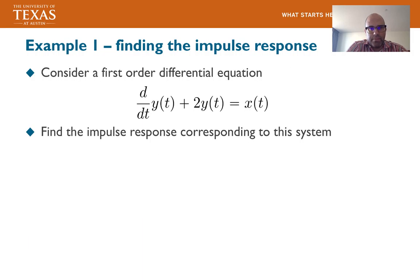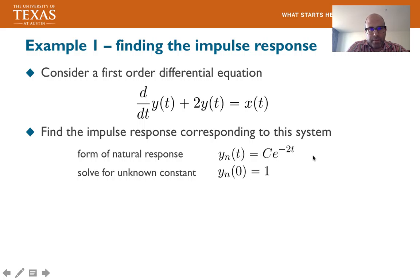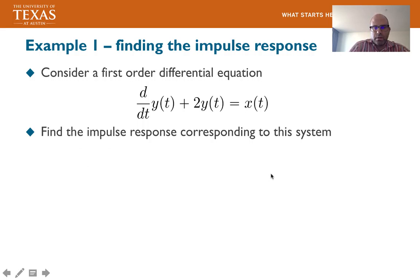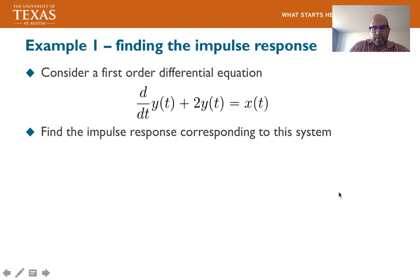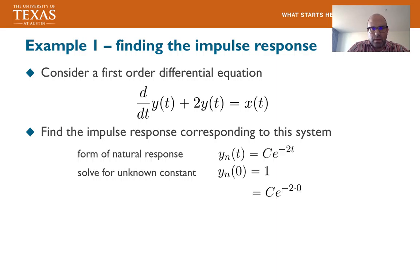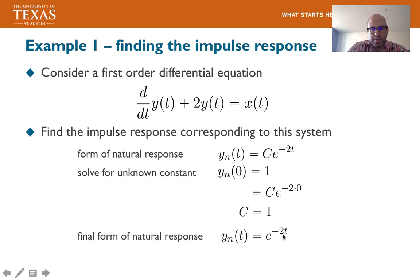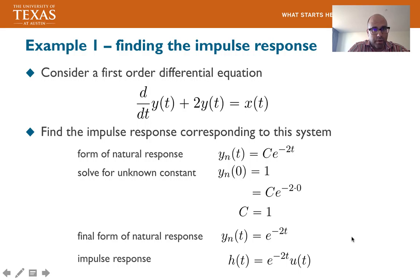Back to our example: finding the impulse response. The natural response has the same form as the homogeneous response. We solve for the unknown coefficient using the initial condition y_n(0) = 1, which gives c = 1, so the natural response is e^{-2t}. Using the impulse response formula, h(t) = e^{-2t}·u(t). This is the impulse response of our first-order linear constant coefficient differential equation.